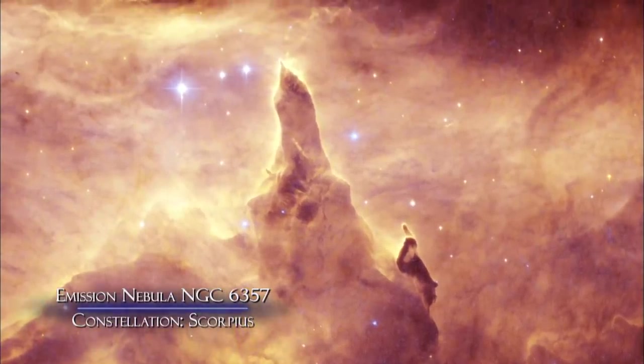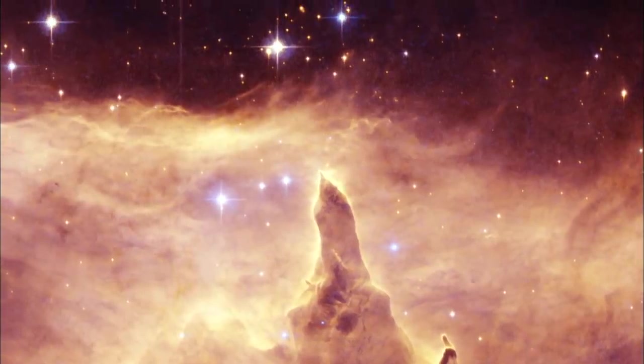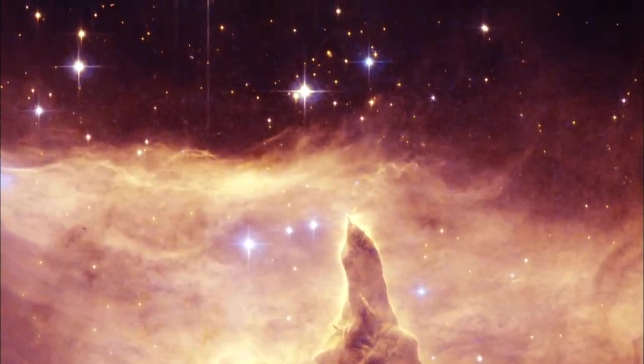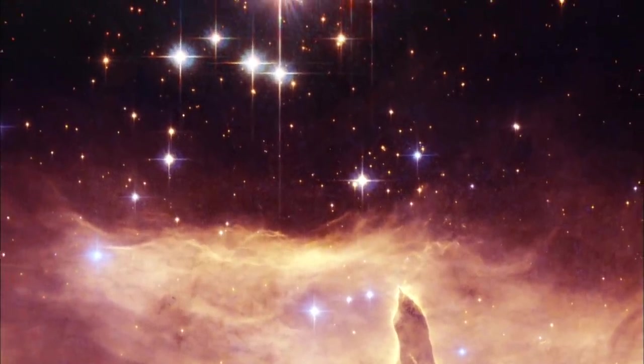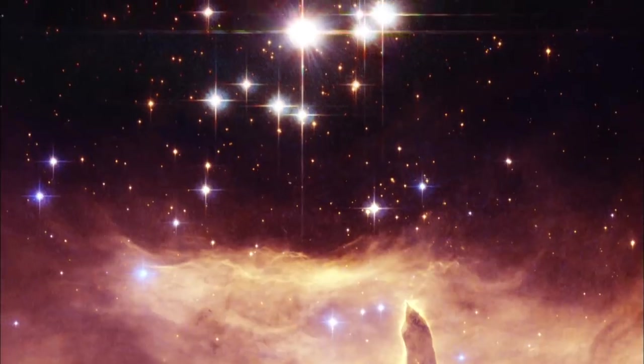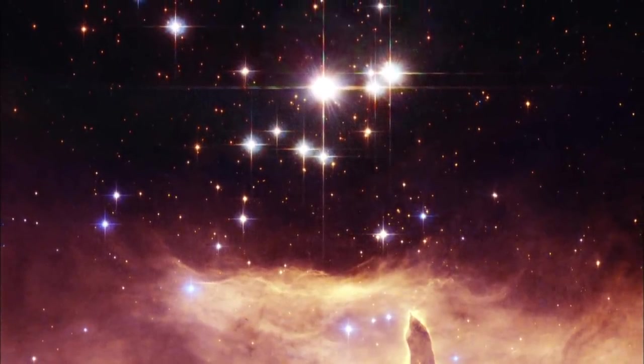Normally, this interstellar gas would be transparent, but when it's energized by nearby stars, it becomes ionized and emits light of various colors. Here on Earth, the same principle lights up a city street at night with colorful neon signs.